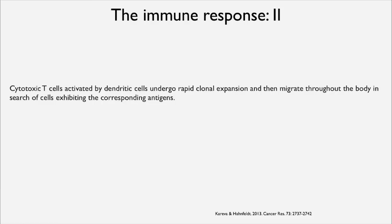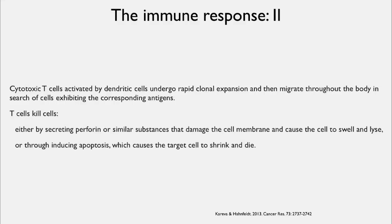In the lymph node, the cytotoxic T cells are activated. They undergo rapid multiplication and then migrate throughout the body, looking for cells that exhibit that specific antigen. They are called cytotoxic because they will kill those cells — either by secreting perforin, a substance that damages the cell membrane causing it to swell and lyse, or by inducing apoptosis, causing the cell to shrink and die.